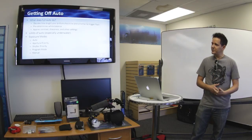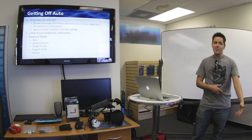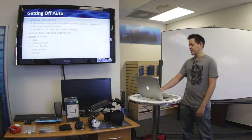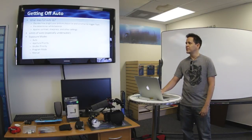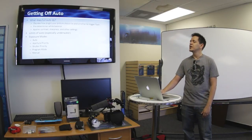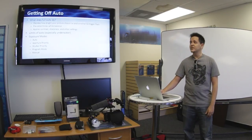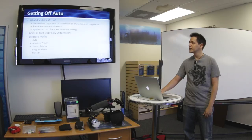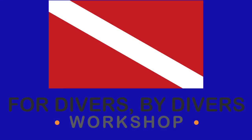Exposure modes: you have auto, aperture priority, shutter priority, program mode, and manual. By the end of this section you're going to understand what all that means and be able to make an informed decision about when you might want to use one versus another.